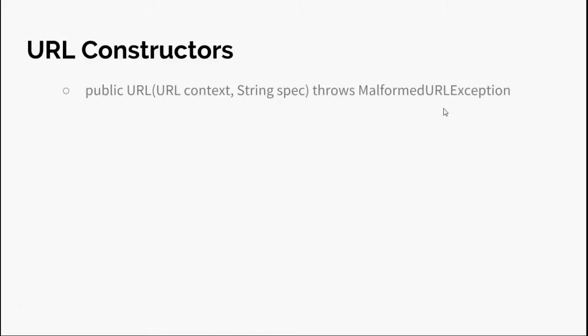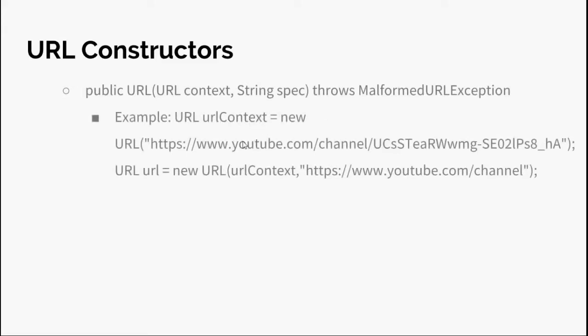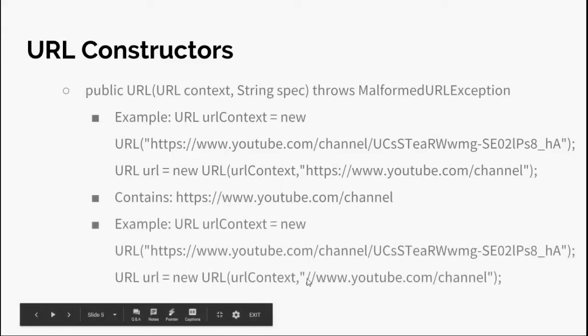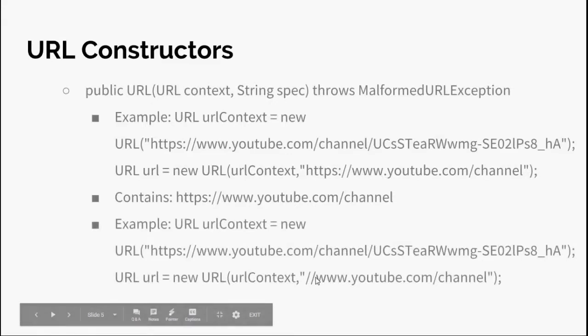The context URL acts as a reference — if something is missing in the spec string, it will be filled from the context. In the first example, all details are specified (protocol, host, path), so nothing is taken from the context. In the second example, the protocol is not specified, so it is taken from the context URL, giving us HTTPS.